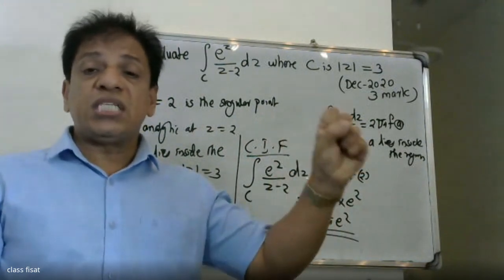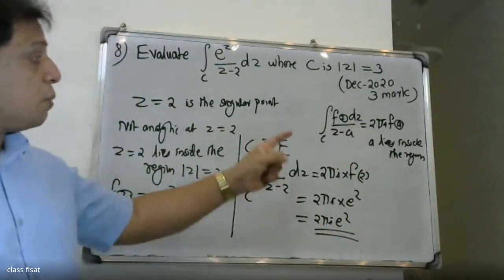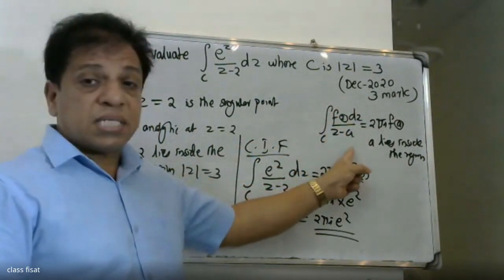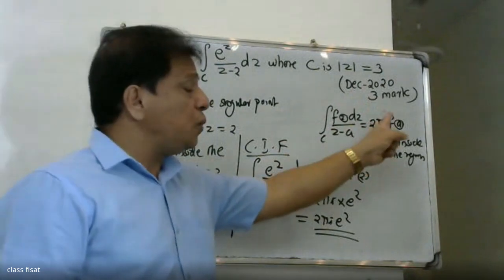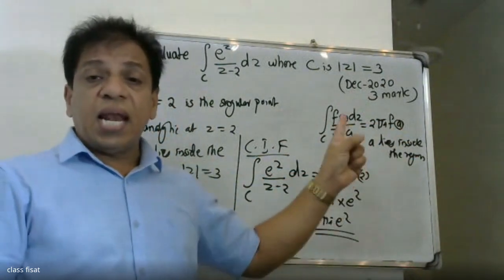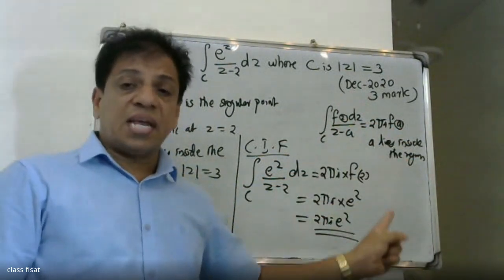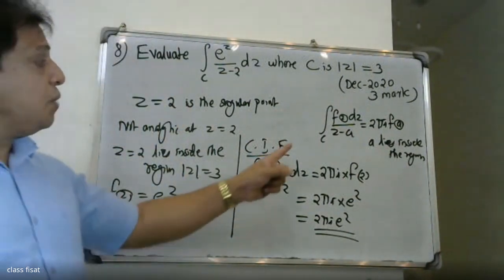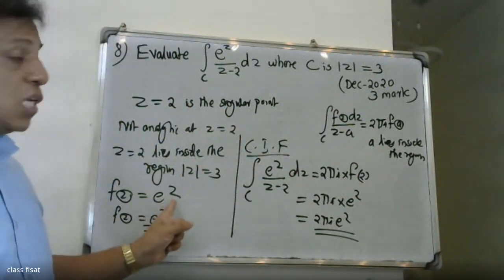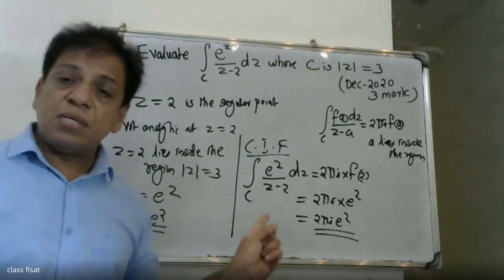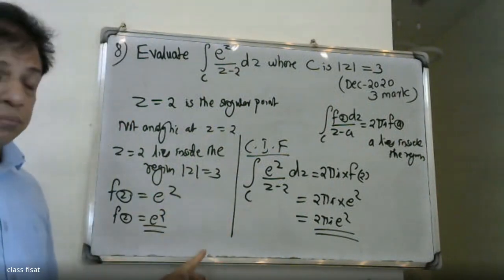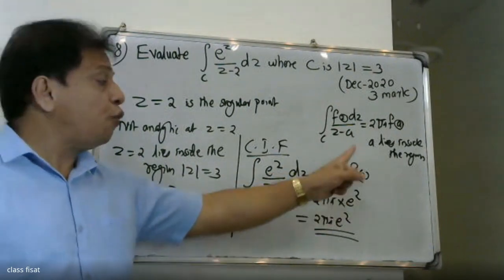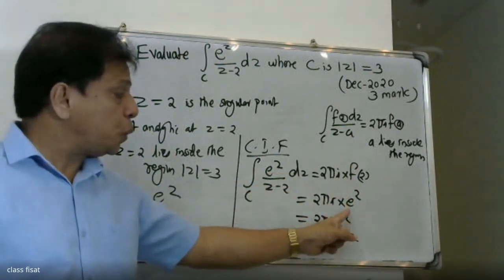Therefore we can apply Cauchy's integral formula. The integral of C, F of Z over Z minus A, is equal to 2 pi i into F of A, where A lies inside the region. Here F of Z gives us 2 pi i into F of 2, and if F of 2 is equal to e squared, then the final answer is 2 pi i into e squared.